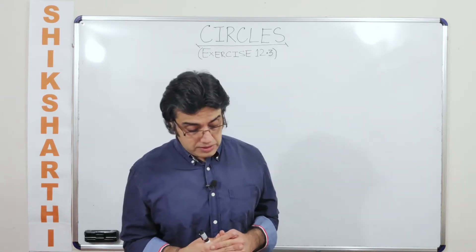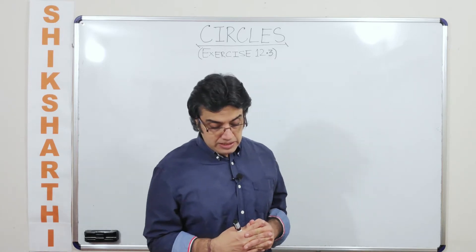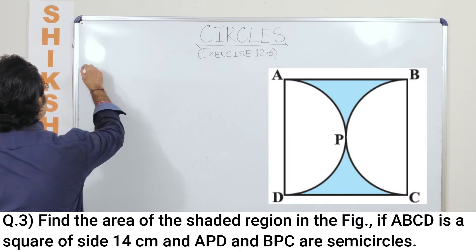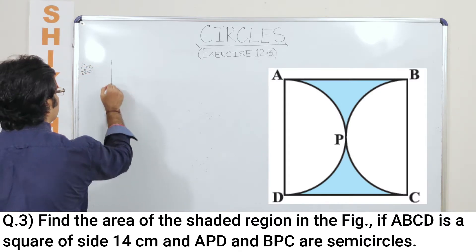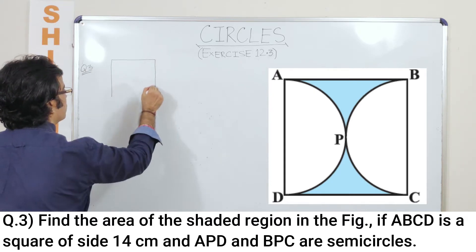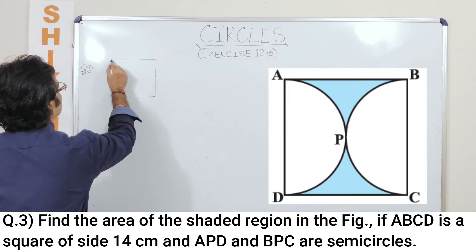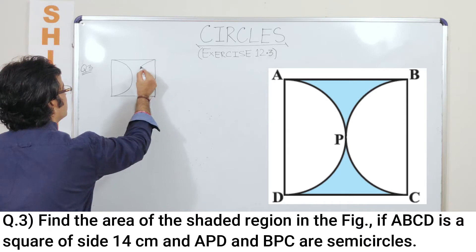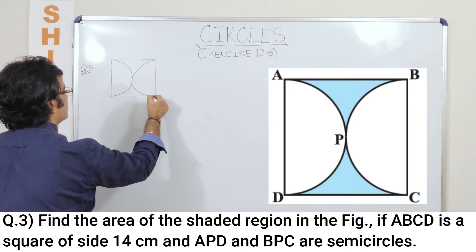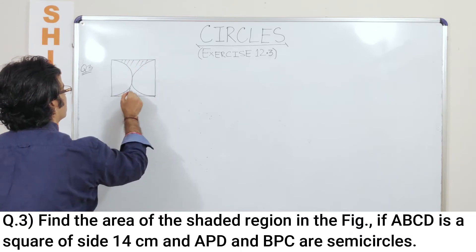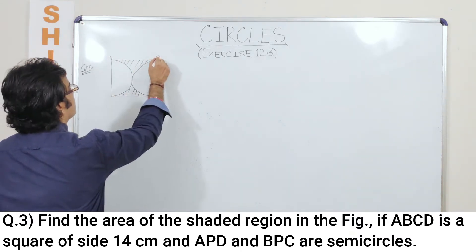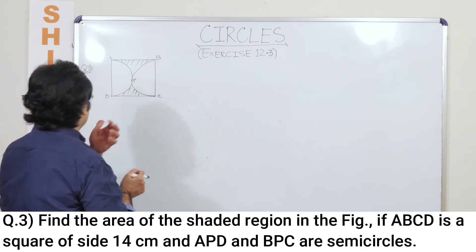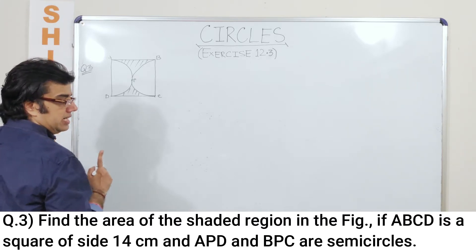Now talking about question number three, it says refer to diagram 12.21. I have already explained this thing to you in my video on basics and concepts in a certain sense. The point of intersection of the circles tangentially means both the circles are touching each other at a single point.